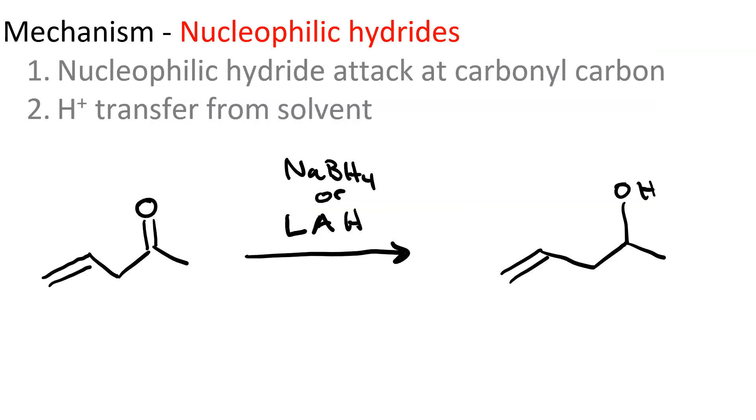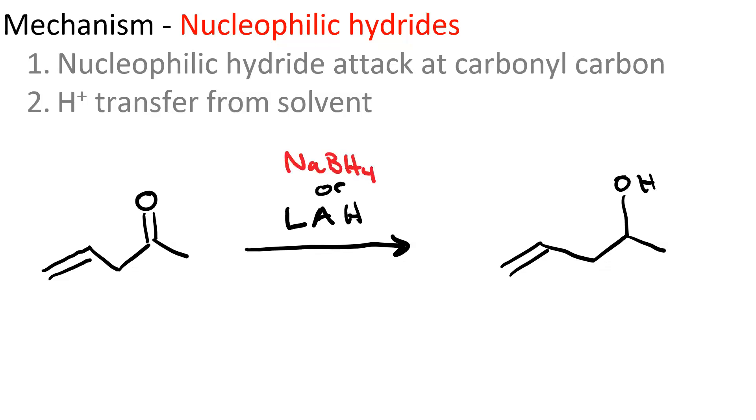Now we're going to look at the mechanism of how nucleophilic hydrides like sodium borohydride, NaBH4, or lithium aluminum hydride, LAH, can selectively reduce a carbonyl without reducing a carbon-carbon pi bond.